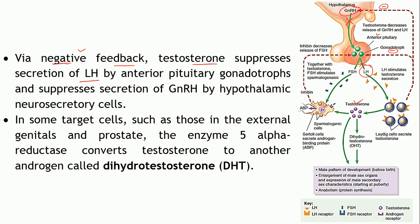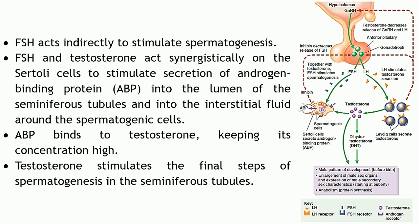In certain target cells such as the external genitals or the prostate, there is an enzyme called 5-alpha reductase. This enzyme can convert testosterone into one more androgen — dihydrotestosterone, or DHT. DHT in turn acts on several aspects and produces several downstream actions.